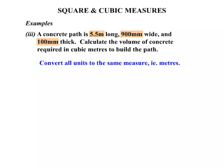In other words, let's convert them all to metres. The reason being is because the question is asking us how much is required in cubic metres. So the first one, the length 5.5 metres, already in metres. 900 millimetres wide. The width 900 millimetres, we need to convert that to metres by dividing by 1,000.